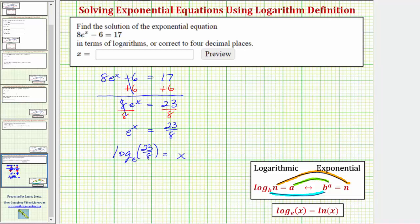Again, log base e is natural log, so we can write this as ln(23/8) = x. Or if we want, x = ln(23/8).